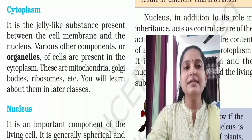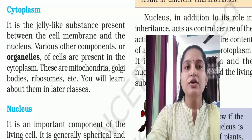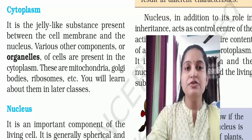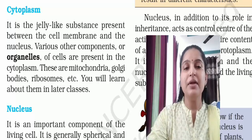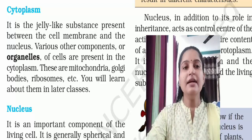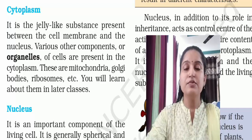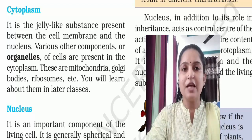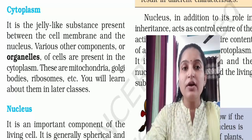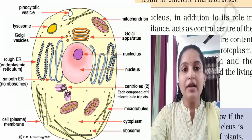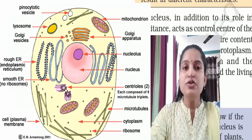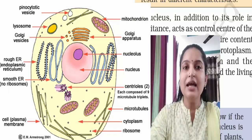Now, what is cytoplasm? It is the jelly-like substance present between the cell membrane and the nucleus. The cell membrane presents various other components, and the organelles of the cell are present in the cytoplasm — such as mitochondria, Golgi bodies, ribosomes, and many other organelles which are embedded in the cytoplasm. But the biggest organelle is the nucleus.